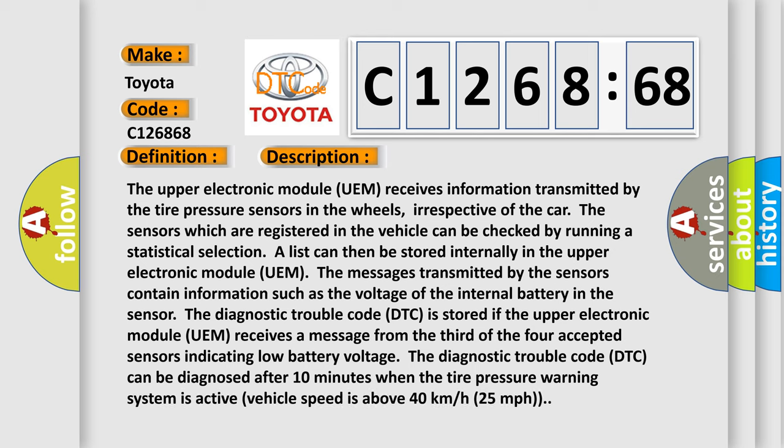And now this is a short description of this DTC code. The upper electronic module (UEM) receives information transmitted by the tire pressure sensors in the wheels, irrespective of the car. The sensors which are registered in the vehicle can be checked by running a statistical selection. A list can be stored internally in the upper electronic module (UEM). The messages transmitted by the sensors contain information such as the voltage of the internal battery in the system.